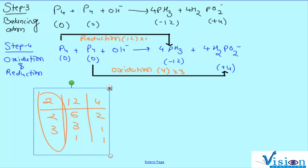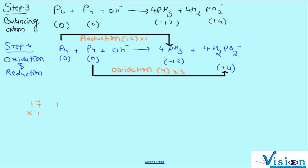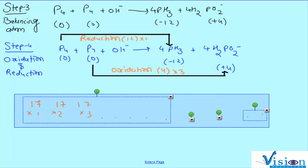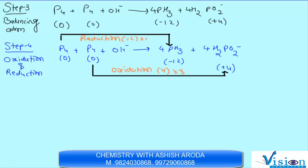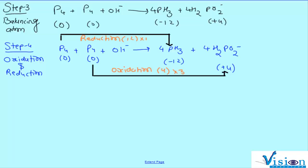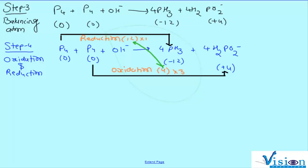12 वाले students tables सीख रहे हैं — NEET की exam आ गई है और calculator not allowed। एक student को 11 × 8 भी नहीं आता था — 11 × 8 = 88 होता है। Okay, will continue — P₄ को 1 से और दूसरे को 3 से multiply करेंगे क्योंकि 12 और 4 का LCM 12 है।